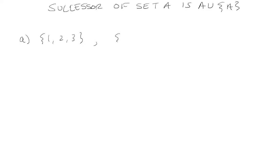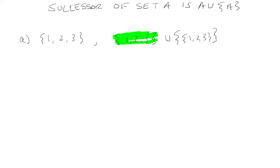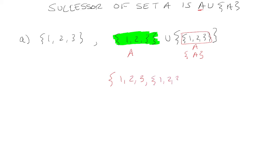The successor of this set will be the set itself union the set of the set. Just to make sure we understand this: this whole thing is A. We'll call this thing A, and then we're going to put the set over A, so this part is the set of A. Now what this is — you're just combining these. So you're combining all of A, which is 1, 2, and 3, and then you're combining this thing, which is the set of {1, 2, 3}. So this is the answer.